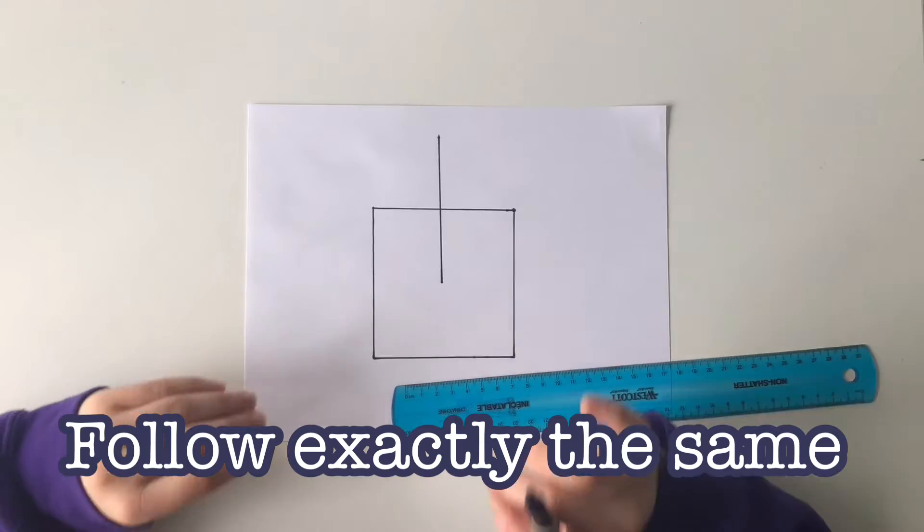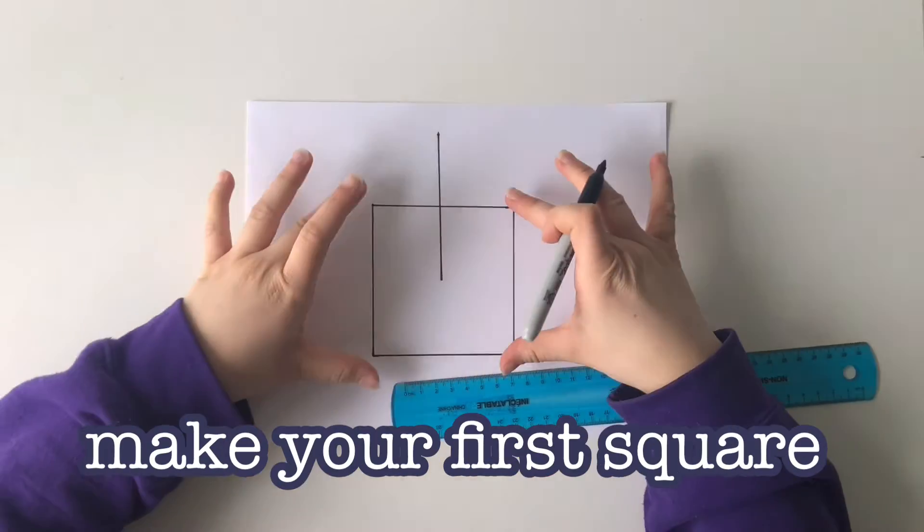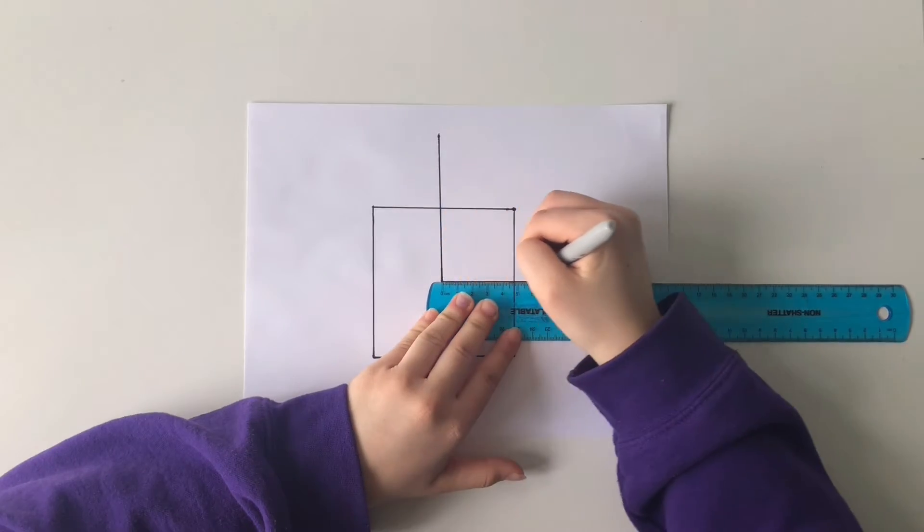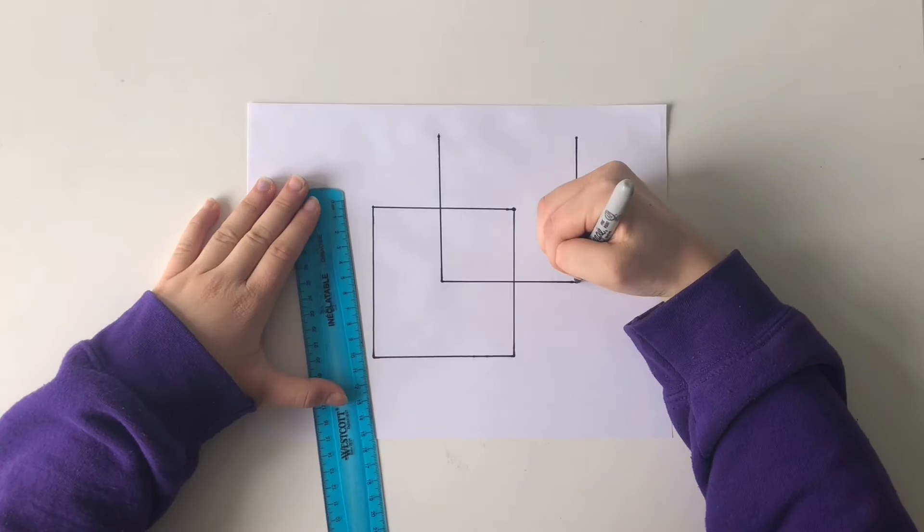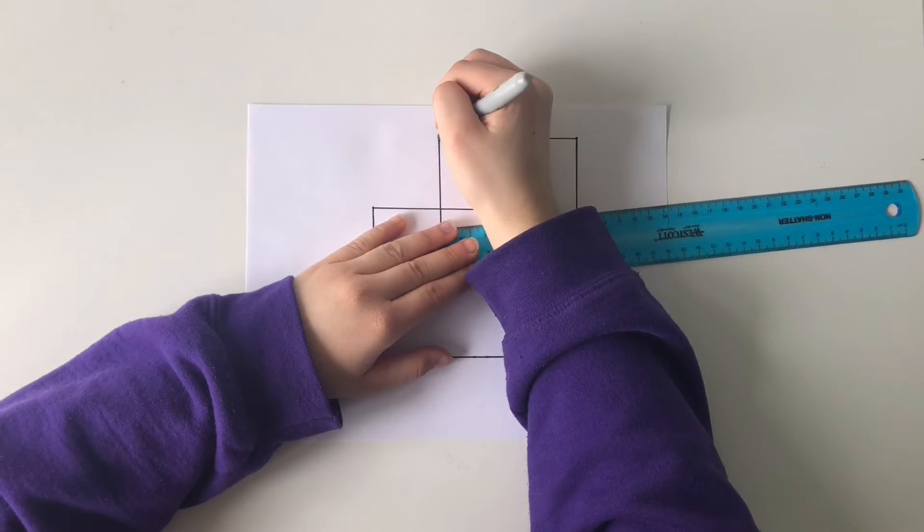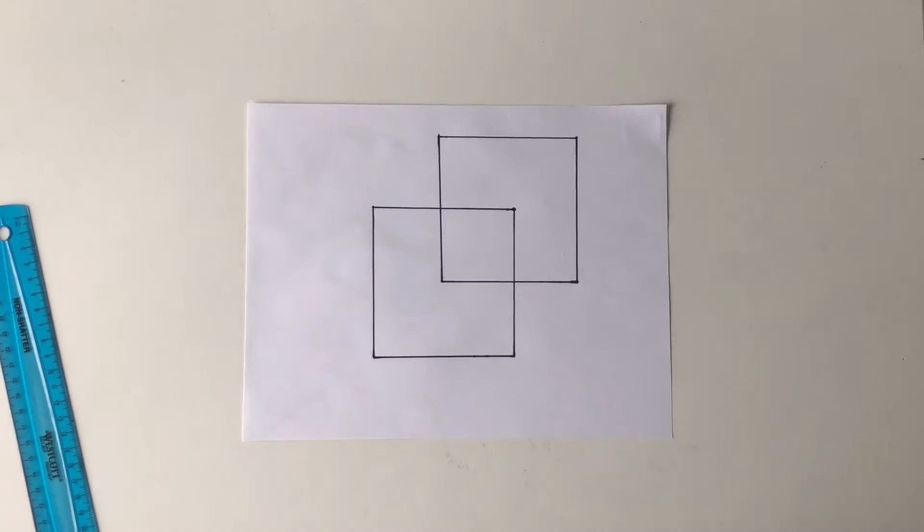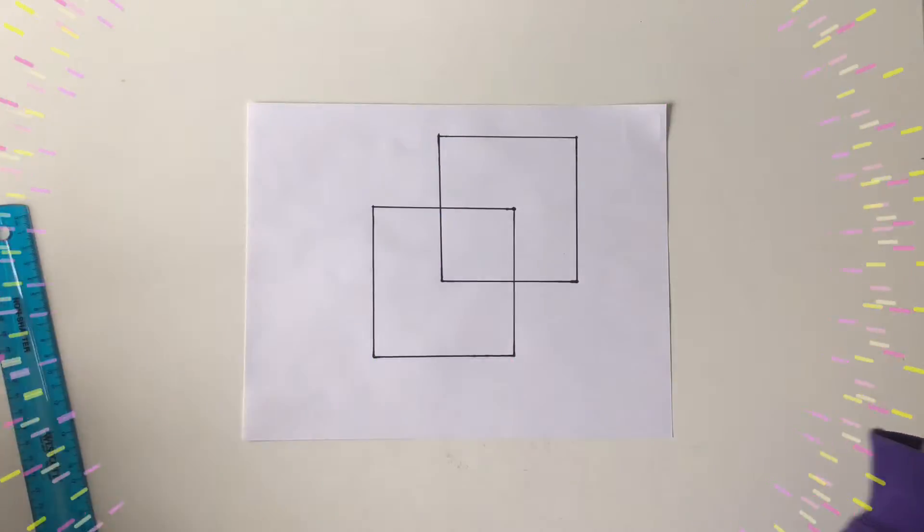From here, follow exactly the same steps that you used to make your first square. Okay, now is for the part that is going to put the whole entire cube together.